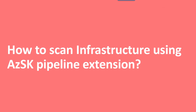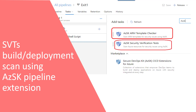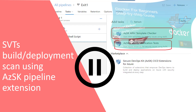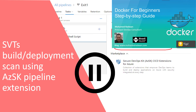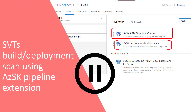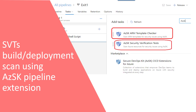So how do we scan for infrastructure using the Azure DevOps Kit pipeline extension? First we need to install the DevOps Kit extension on our Azure DevOps organization. Once we install the extension we have two tasks. The first is to scan the actual infrastructure so we can understand the drift status. The second is to check the ARM template, or infrastructure as code, to prevent creating an insecure environment.